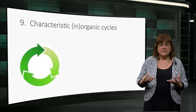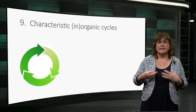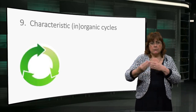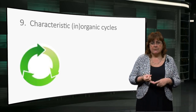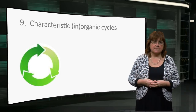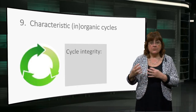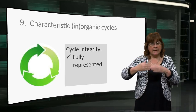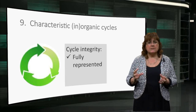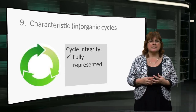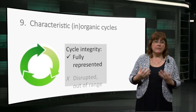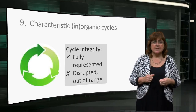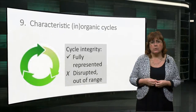Ninth, the principle of characteristic inorganic cycles. That relates to the integrity of the throughputs of carbon, nitrogen, phosphorus and silicon in an ecosystem. Inorganic and organic cycles that are fully representative function at all levels within their natural ranges, acting to support and enable ecosystem character. When the throughputs are disrupted or pushed outside their natural ranges, the character and functioning of the ecosystem can alter.